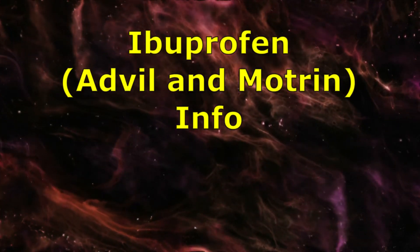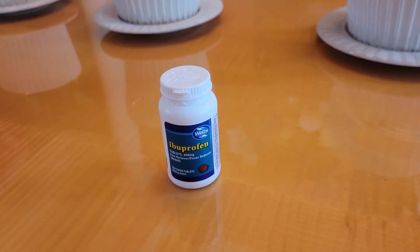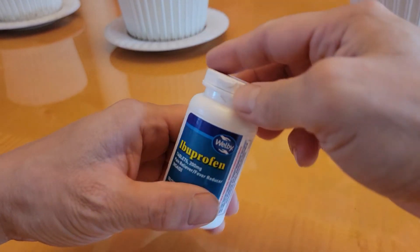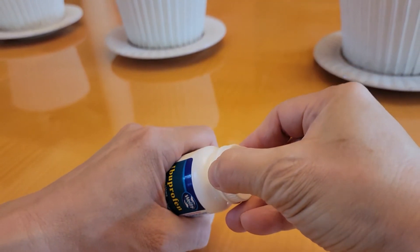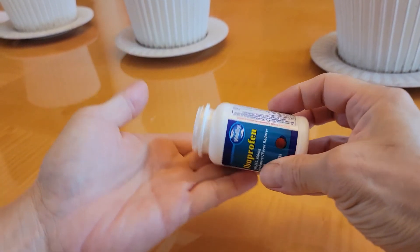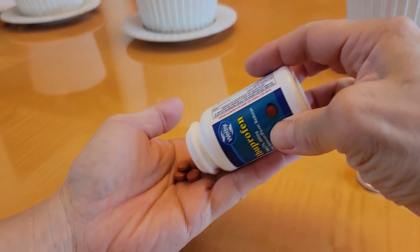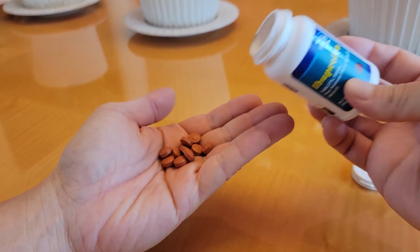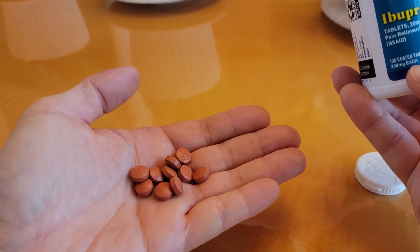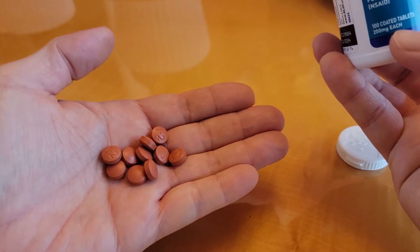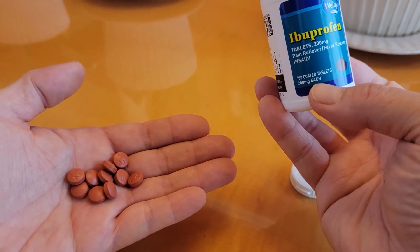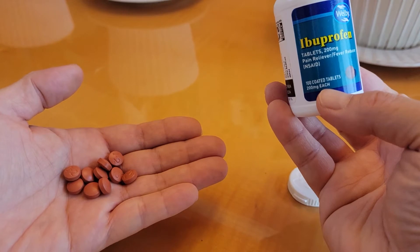Ibuprofen (Advil and Motrin) is a short-acting NSAID that starts working faster than naproxen. This may make it better for acute pain, like a new injury. Ibuprofen has fewer side effects than some NSAIDs but can cause heartburn and a rash. It should be avoided in people with kidney or liver problems and may increase the risk of hypertension and heart attack if taken excessively. It provides pain relief, works as an anti-inflammatory to reduce swelling, and is longer-acting than Tylenol. Available as a pill, chewable tablet, and liquid. It needs to be taken with food or milk, should not be taken if a child is vomiting, dehydrated, or not eating much. May not be used in children with gastrointestinal or kidney abnormalities, 72 hours prior to surgery, or in patients under 6 months old.